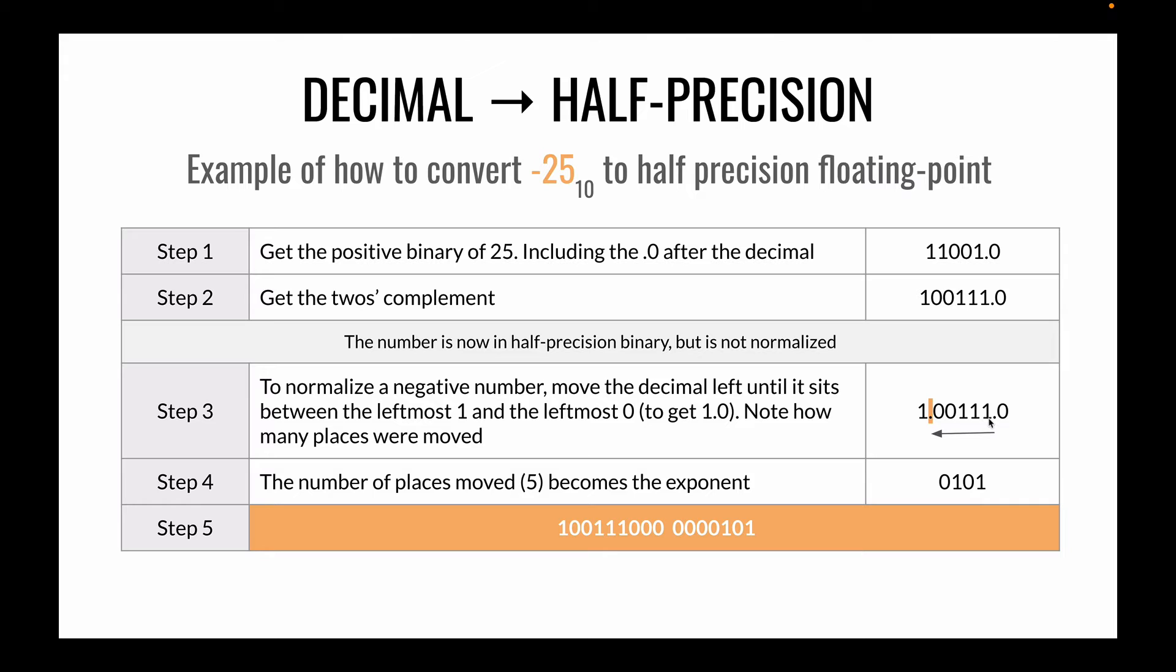And we do the same thing. We move it over until it sits between the leftmost 0 and the leftmost 1. And in this case it's going to be a move of 5 giving us an exponent of 5. And we now have a number negative 25 with an exponent of 5.